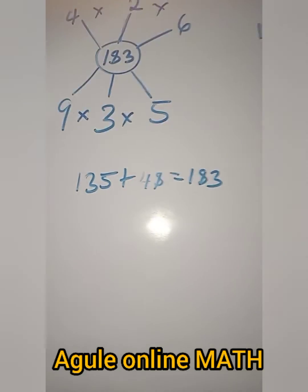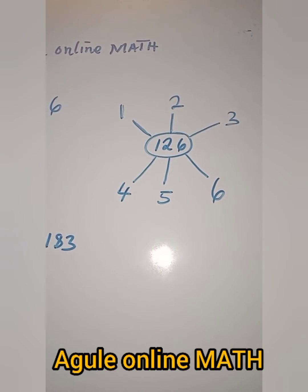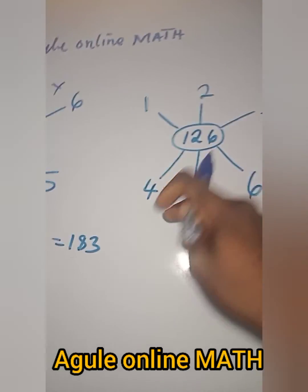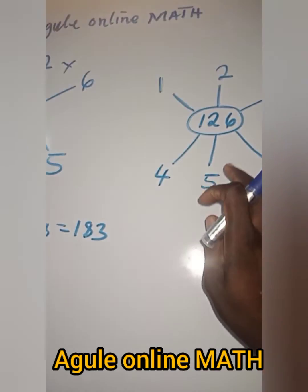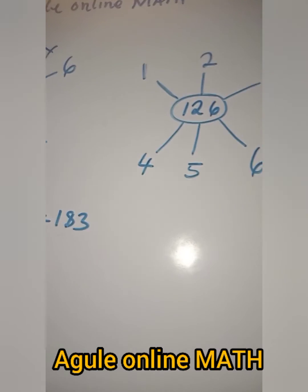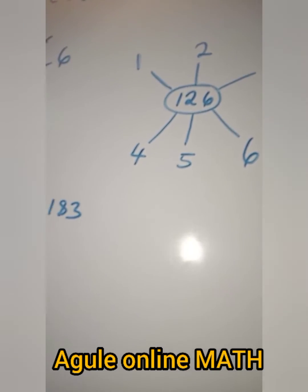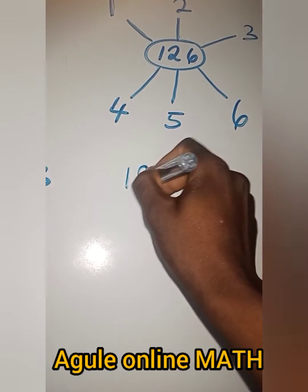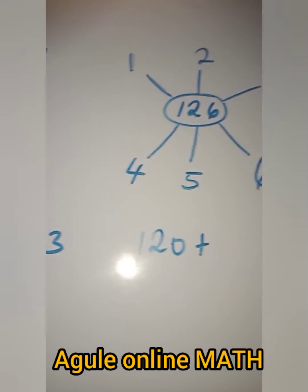That is all. So the same thing here. We have the down one, 4 times 5, that is 20. 20 times 6, that is 120. So 120 plus the one up.